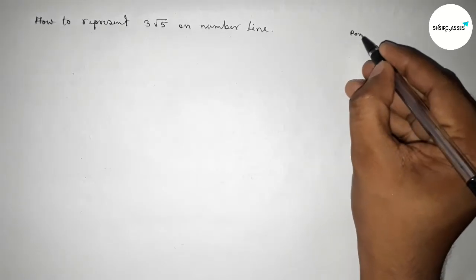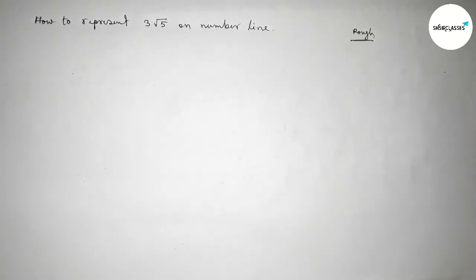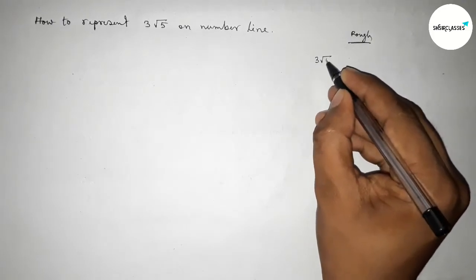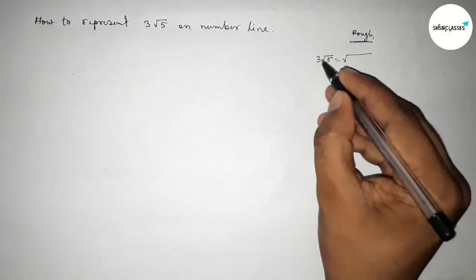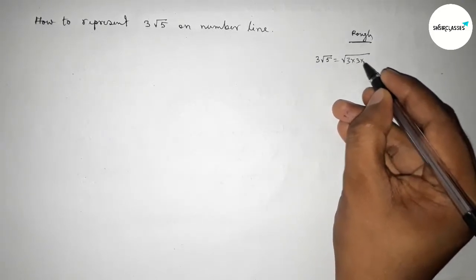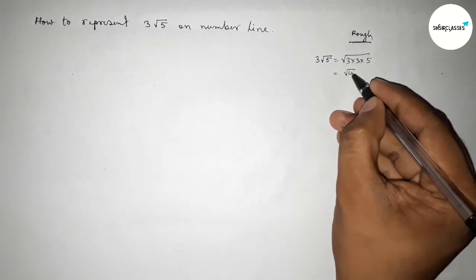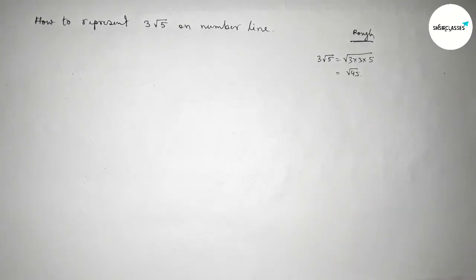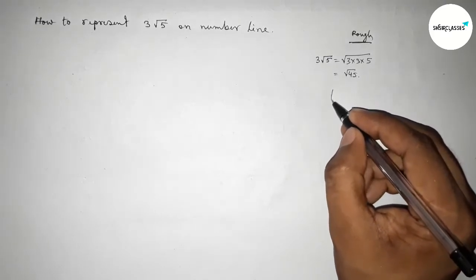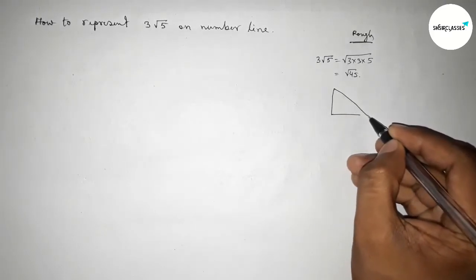First of all, roughly discussing some calculations here. So here given 3 root 5, equal to we can write 3 into 3 into 5, so this is 45. Now roughly drawing here a right angle triangle.